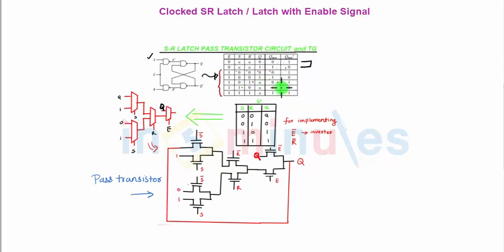If my S is 1 and R is 0, then the output is set at 1. And if it's 1, 1, then we already know that it's a race condition and that's technically not allowed, but both outputs will try to go to logic high.